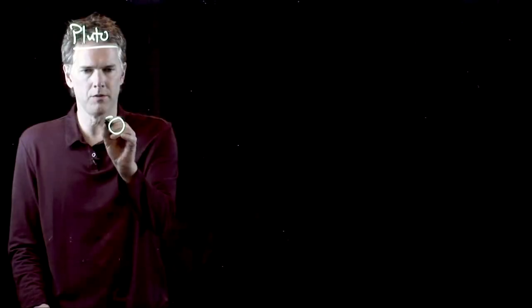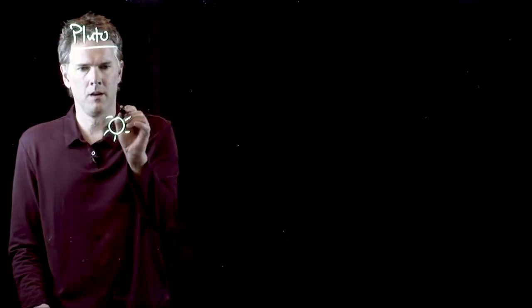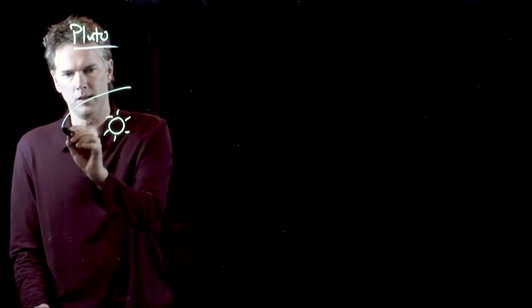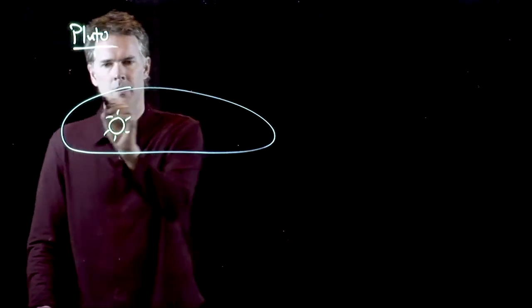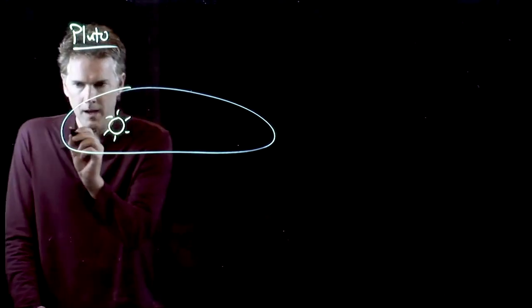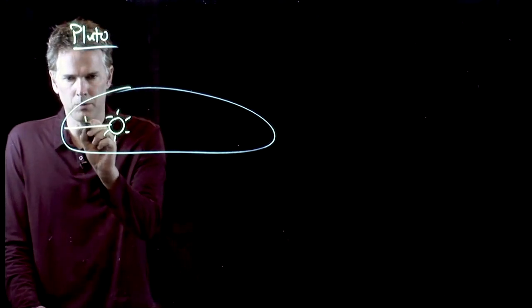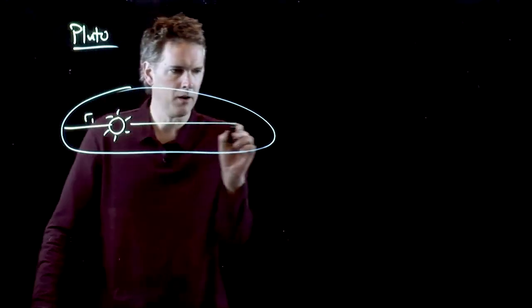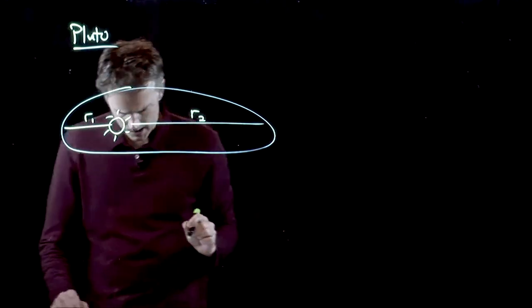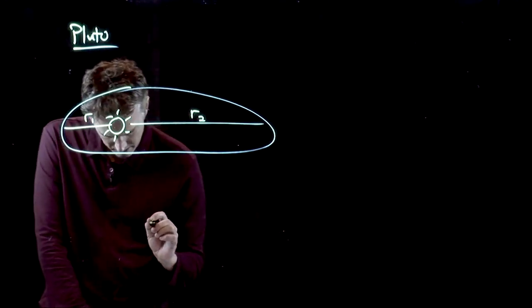So the Pluto problem looks like this. Here's our Sun. Pluto is in this elliptical orbit about the Sun, and there is some close approach. We'll call that R1. There is some distance, R2, and what they tell us is the following.